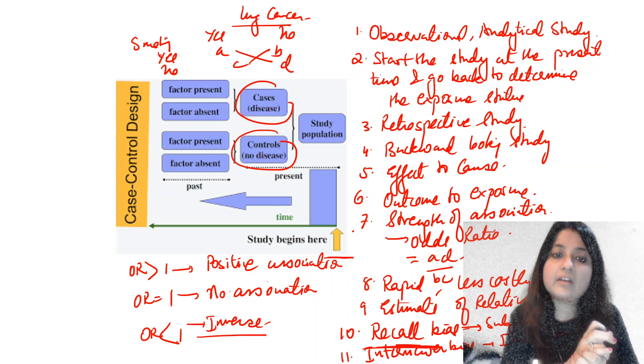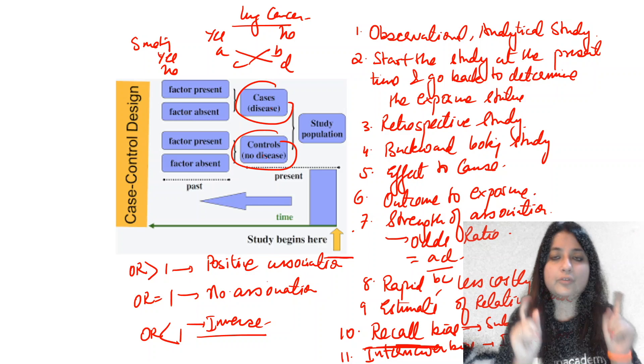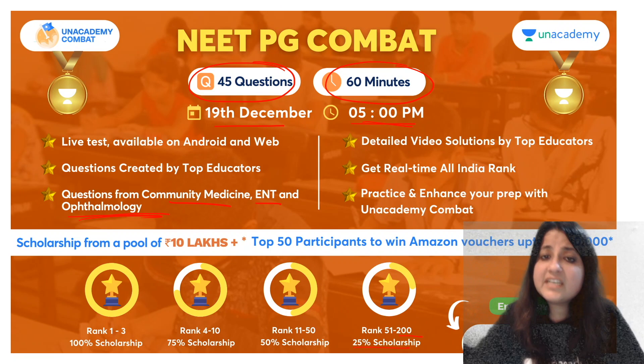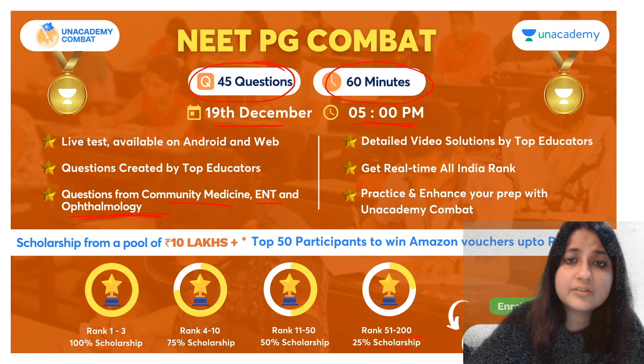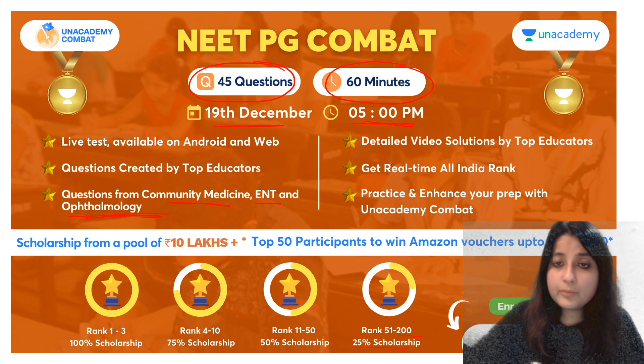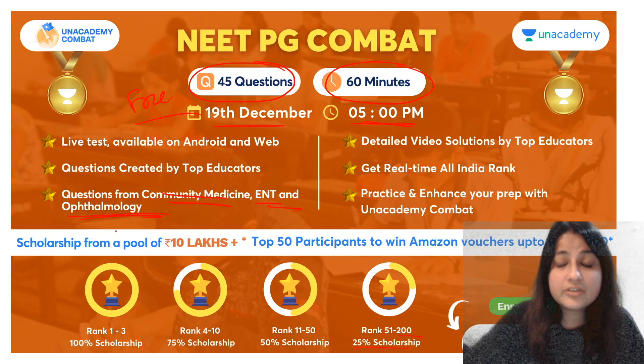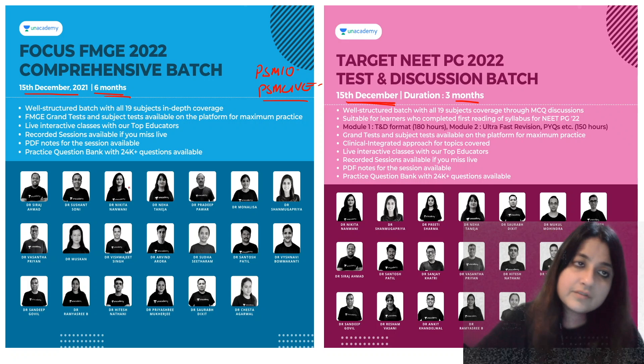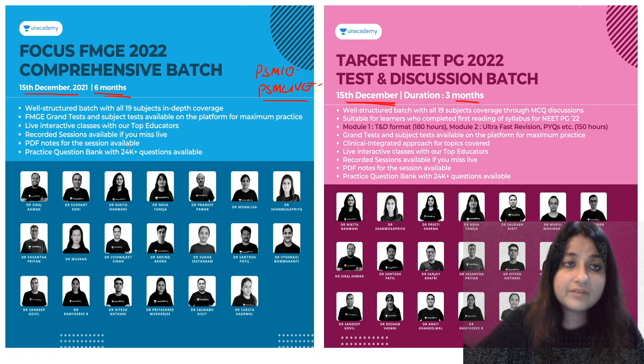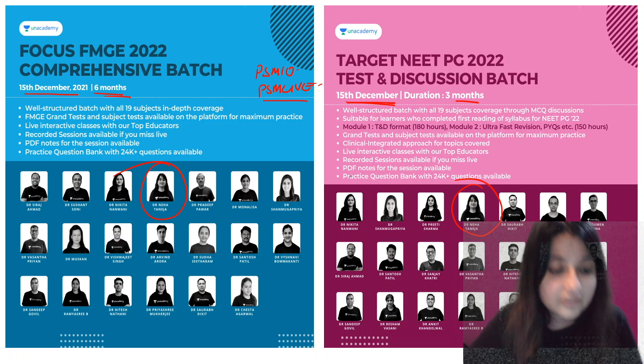So this is all about a case control study design which you must remember. We are having a NEET PG combat on the 19th of December, 45 questions at 5 PM, so do participate. It's absolutely free. We are having Community Medicine, ENT, and Ophthalmology. This gives you an amazing opportunity to win scholarships and free Plus subscription. Also, batches which have started on Marrow Academy, we just started with a comprehensive FMG batch course. I'll be taking PSM for you and a target NEET TNB batch which is NEET PG. I'll be taking PSM. You can use my code PSM10 or PSM Life. Thank you so much. I'll be back with another image pretty soon. Best wishes.